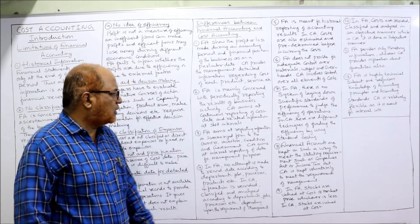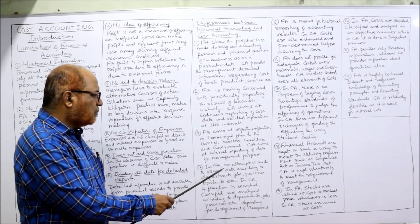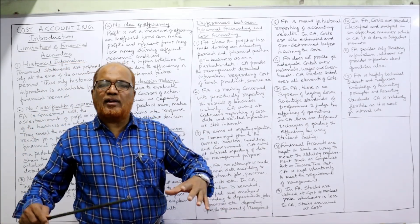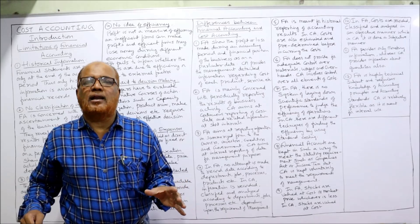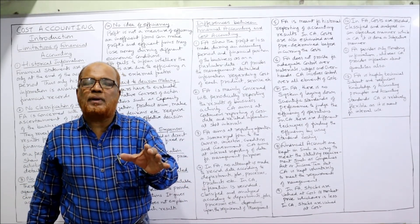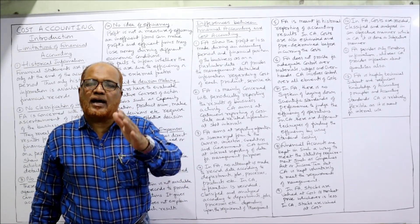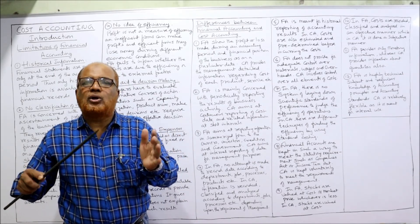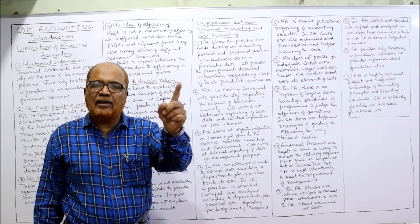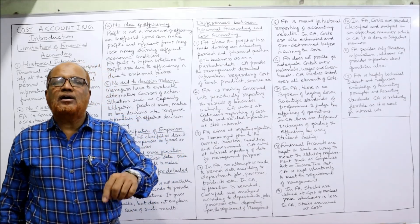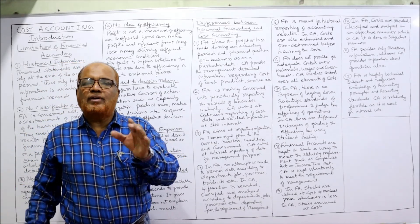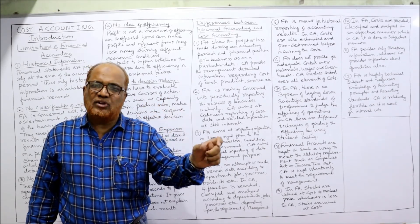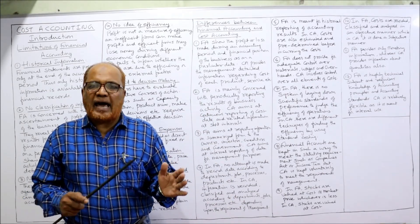In financial accounting, no attempt is made to record data regarding departments, jobs, or processes — expenditure is recorded in total as a whole, not divided by product, department, or process; all costs are clubbed together. Whereas in cost accounting, we segregate and find out how much cost is incurred for a particular product, department, division, or activity.